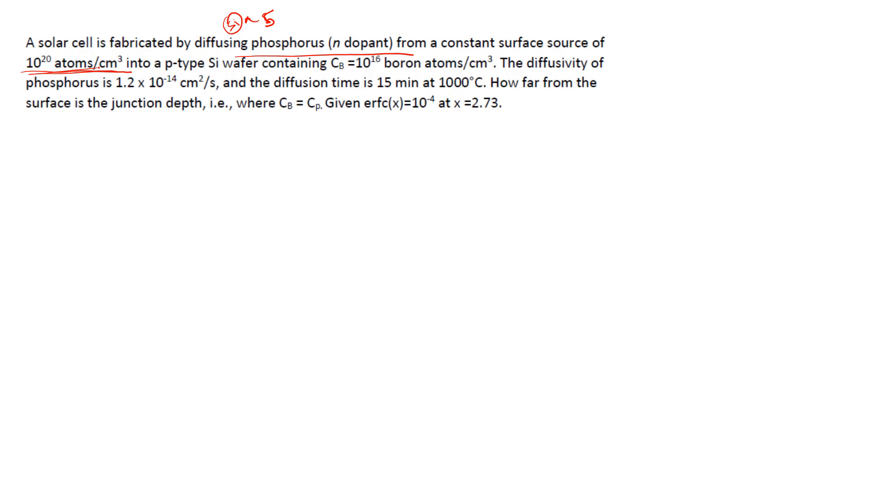Into a p-type silicon wafer containing Cb, that means how we have made this p-type by adding some boron that has the concentration 10 to power 16 boron atoms per cm³.